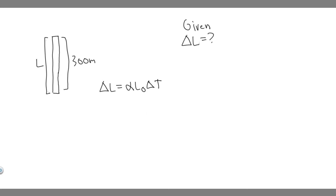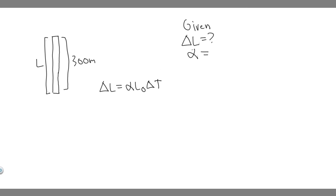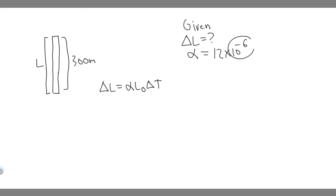All we've got to do is find these values. We need to know what alpha is, the initial length, and the change in temperature. Alpha is the coefficient of linear expansion, and it's going to be different for every single material. For wrought iron, which is what the tower is made out of, alpha is going to be equal to 12 times 10 to the minus 6 inverse degrees Celsius.